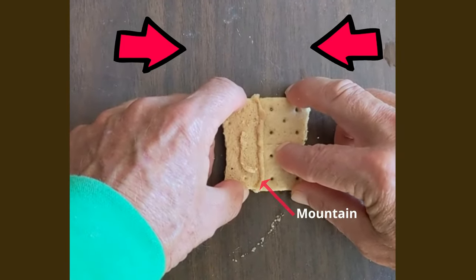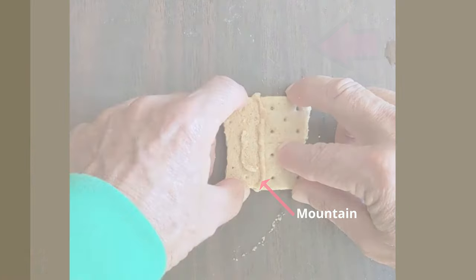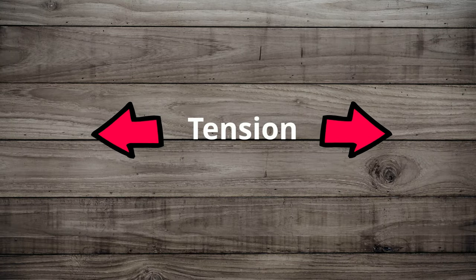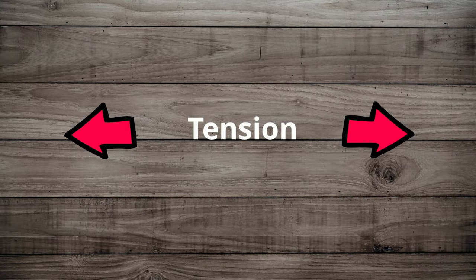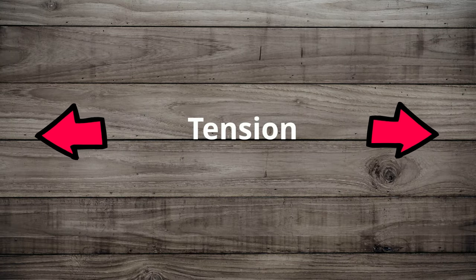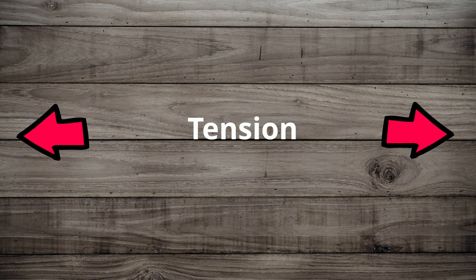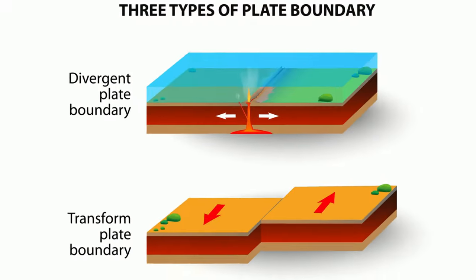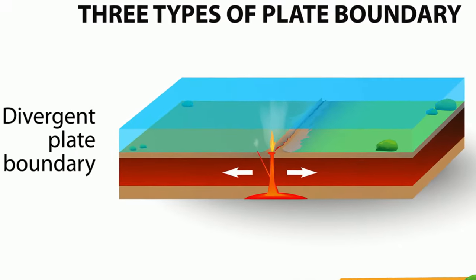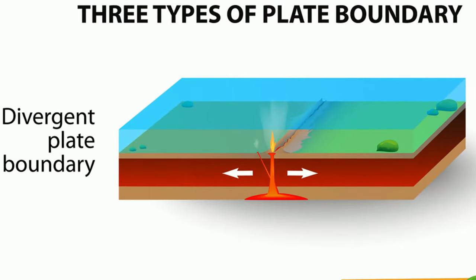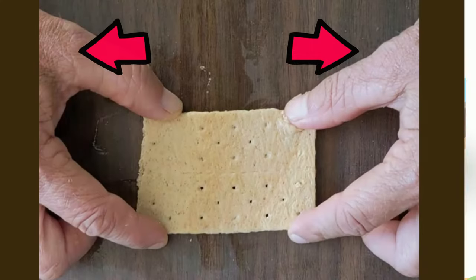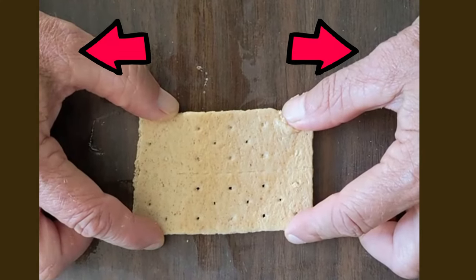When forces act to stretch an object, it is called tension. Tension occurs at a divergent plate boundary, such as a mid-ocean ridge, when two tectonic plates pull away from each other. Check out this graham cracker example.